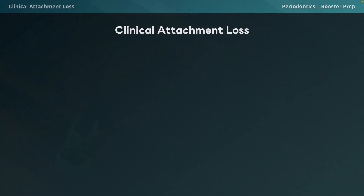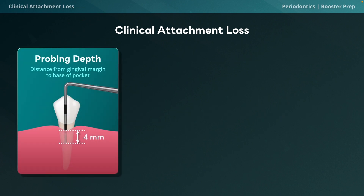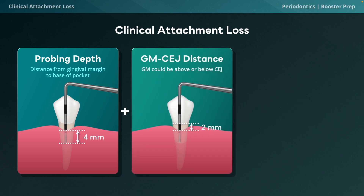During a periodontal examination we examine the health of the gums and supporting structures by looking for clinical attachment loss (CAL). This is calculated using two measurements. First, probing depth — the distance from the gingival margin to the base of the pocket (e.g., 4 mm as read on the probe). Second, the gingival margin to cemento-enamel junction (CEJ) distance — the distance from the gingival margin to the CEJ.